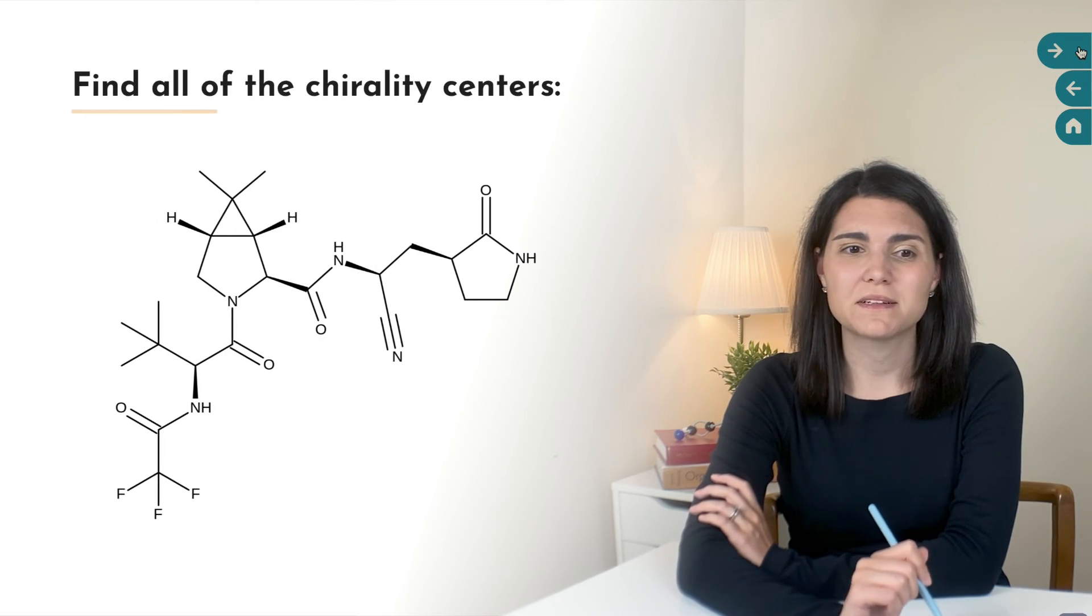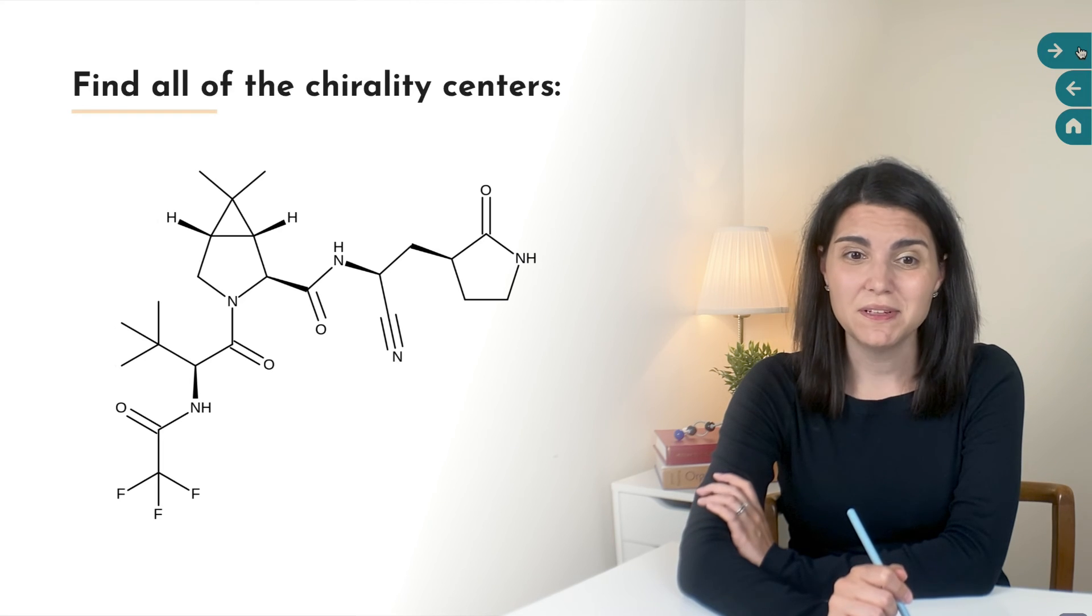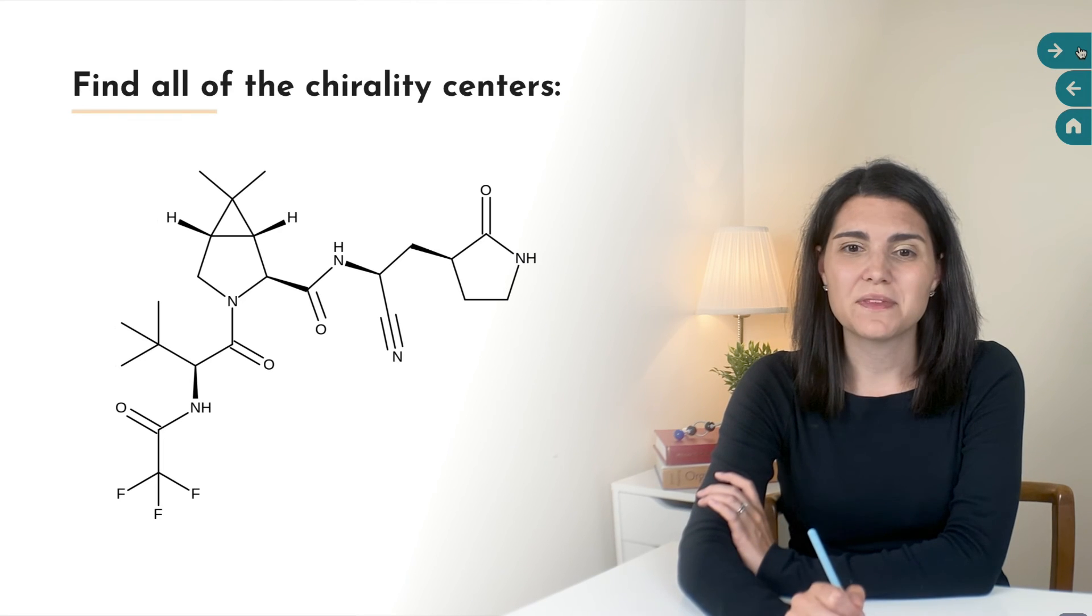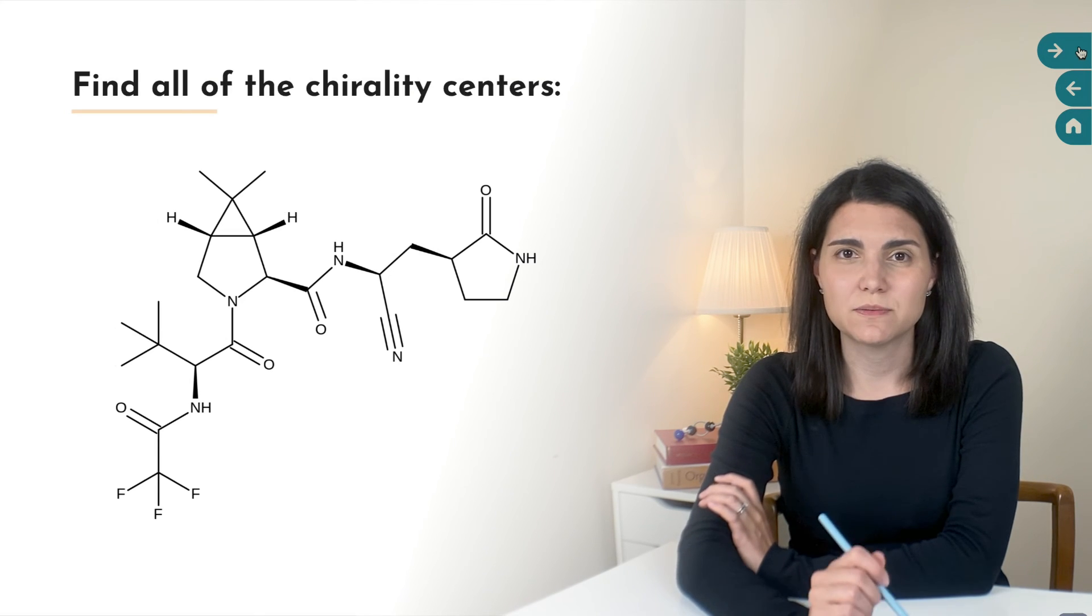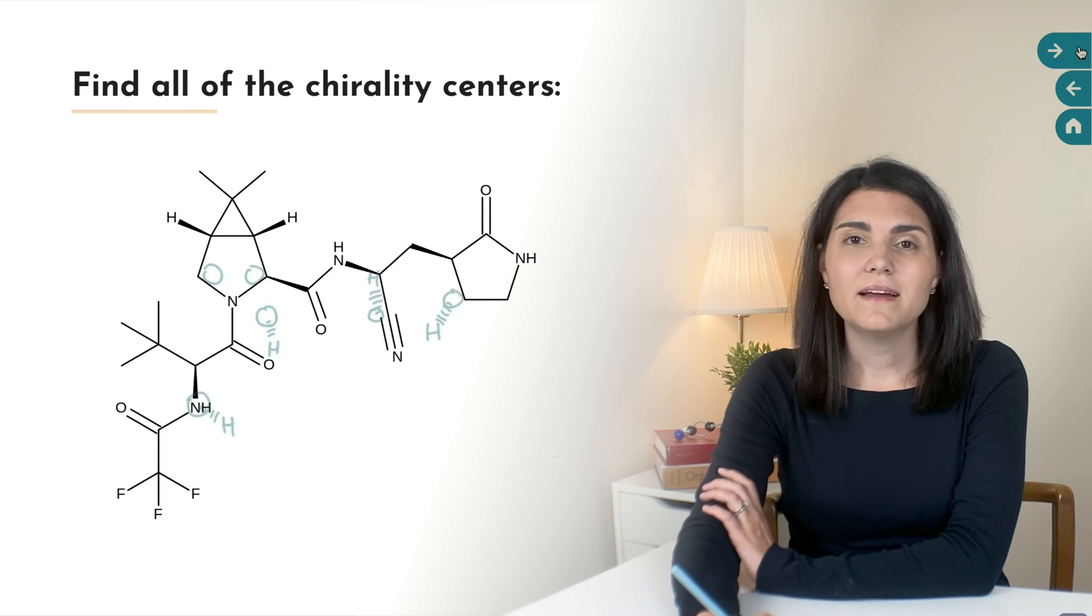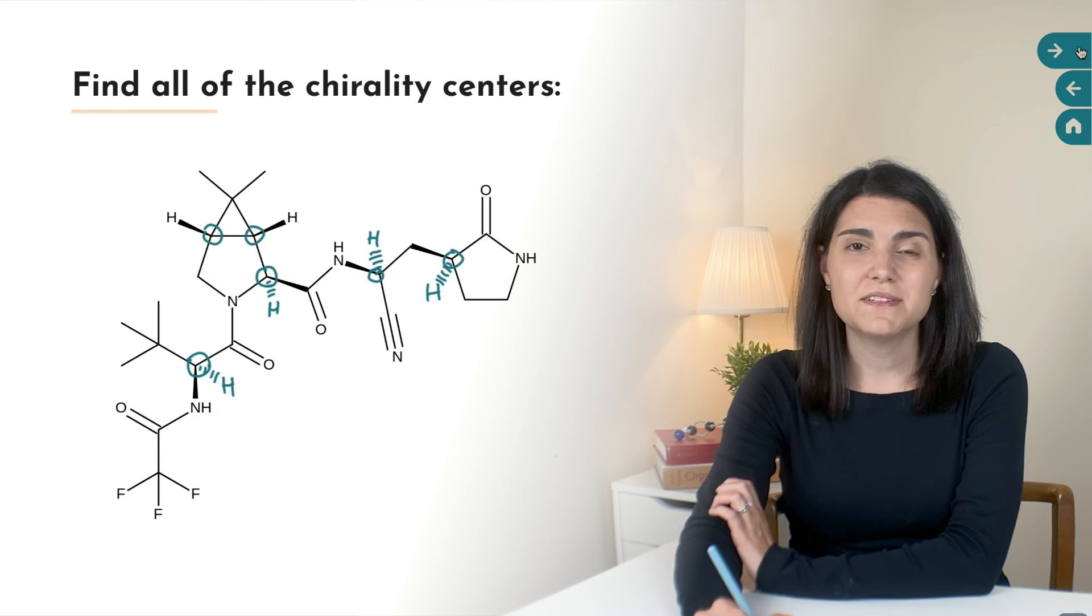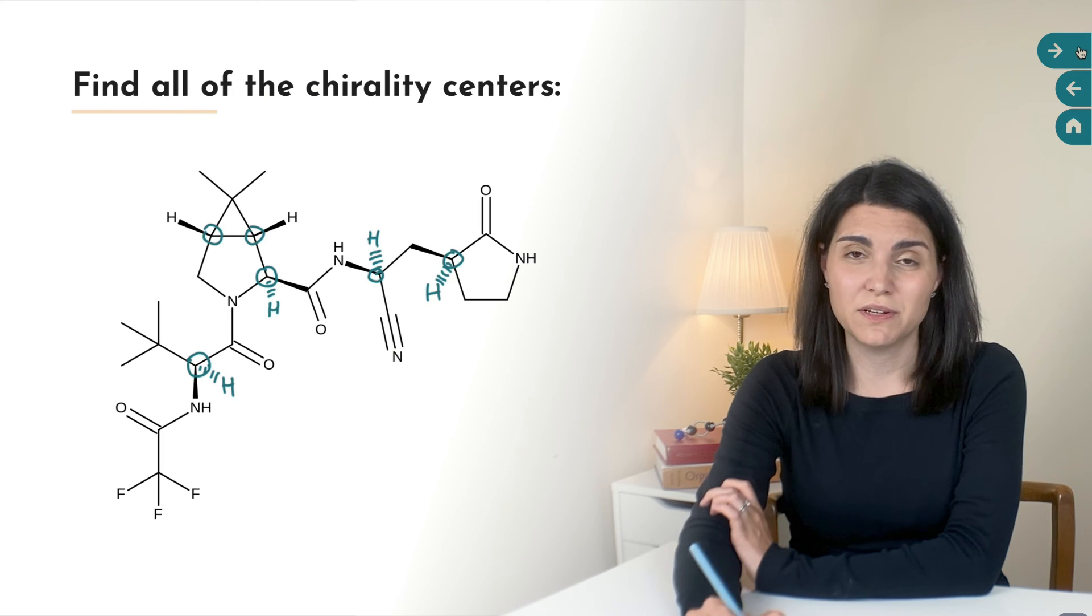Time to do another practice problem. Here is a giant molecule. If you know what this is, let me know in the comments, and you can pause the video now and give this a shot. See if you can identify all of the chirality centers on this great big molecule here. And here is the solution. Each of these carbons that I've circled is sp3 hybridized and connected to four different groups.